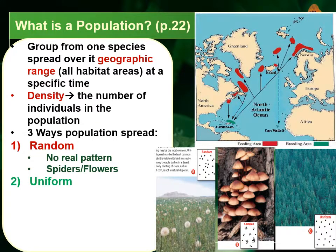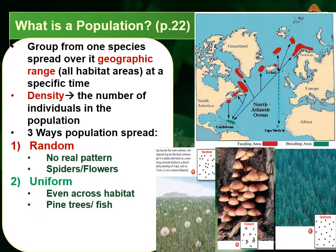Next, we could have a uniform distribution. With uniform, everything is very evenly spread across its habitat, and there's a very specific space they must maintain before they interact with the next member of their own population. Pine trees are a good example — they follow a very specific spacing limitation. Schools of fish are another example; whether in an aquarium or scuba diving, they maintain a very specific uniform distribution as they move as a group.